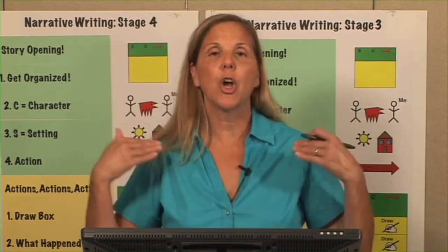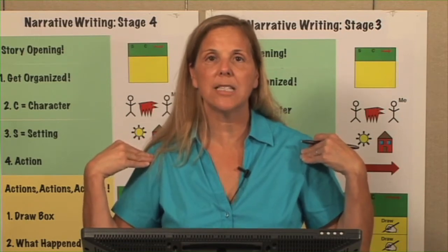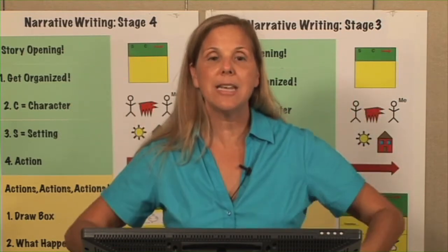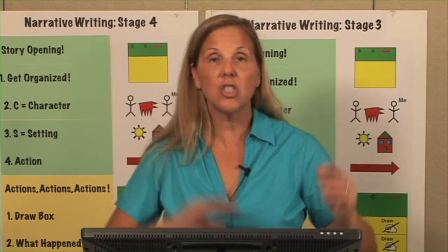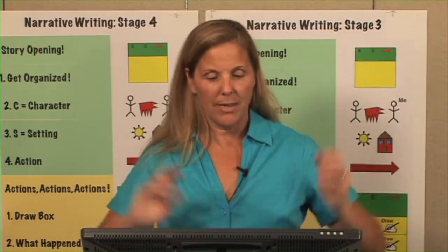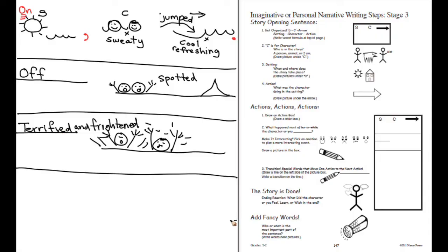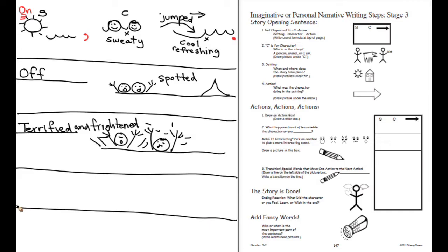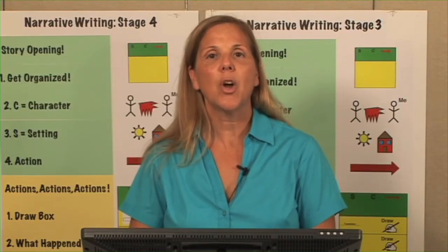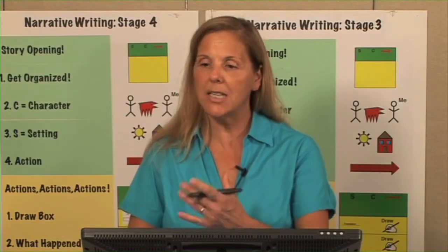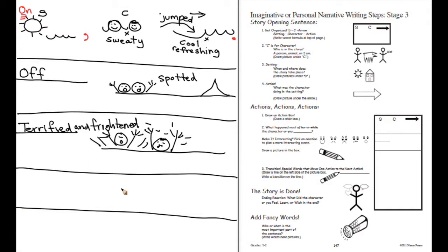What do we do? Let's go back and repeat the steps. Ready? What happened next? After the kids started waving their hands in the air, we draw our action box. What happens? We have the kids talk to each other about an idea. Someone says the lifeguard came in and saved them. So here's the lifeguard — he's going to come out and pull the kids back in.